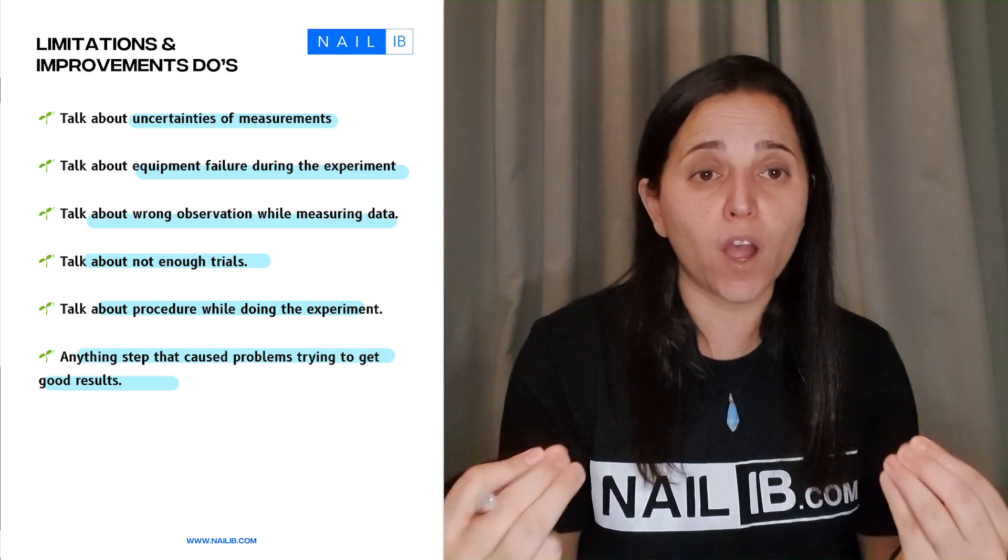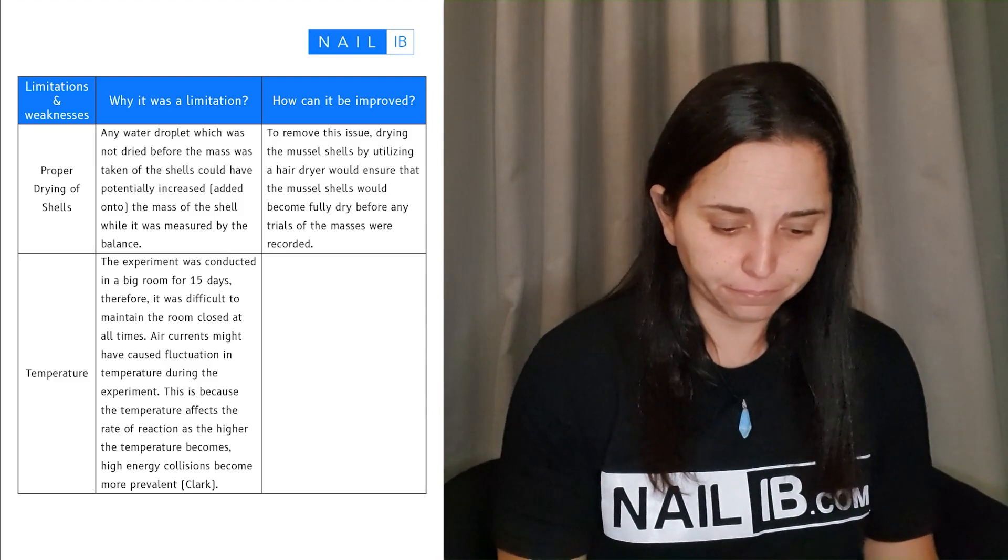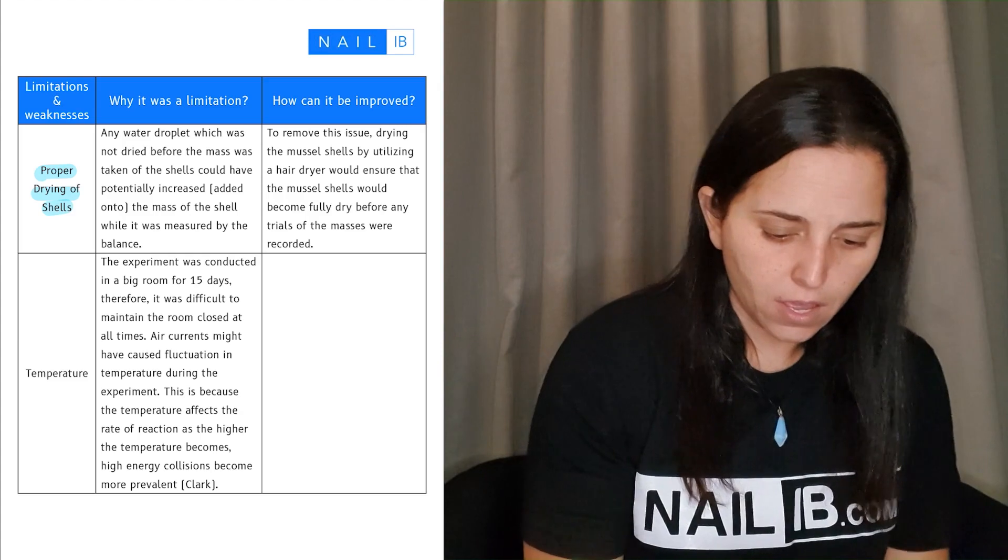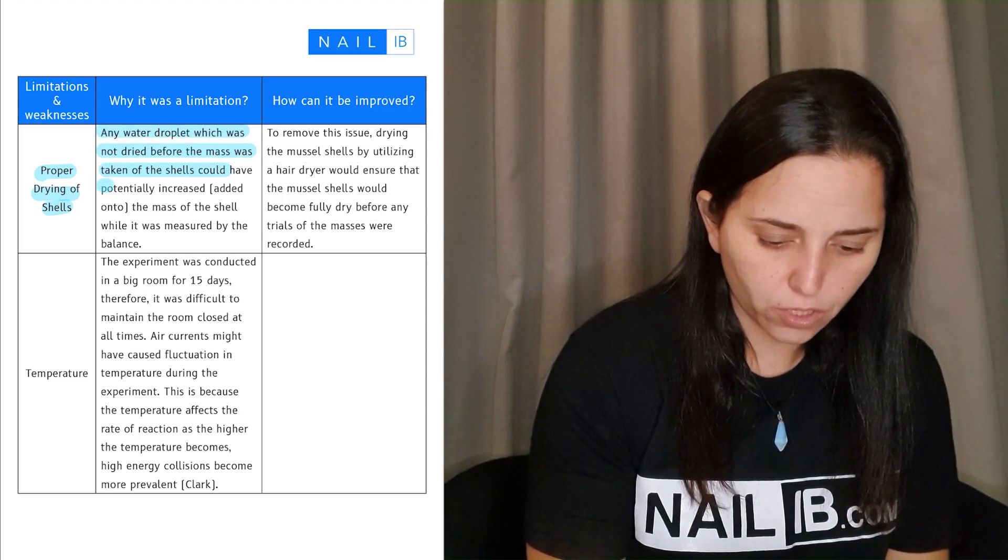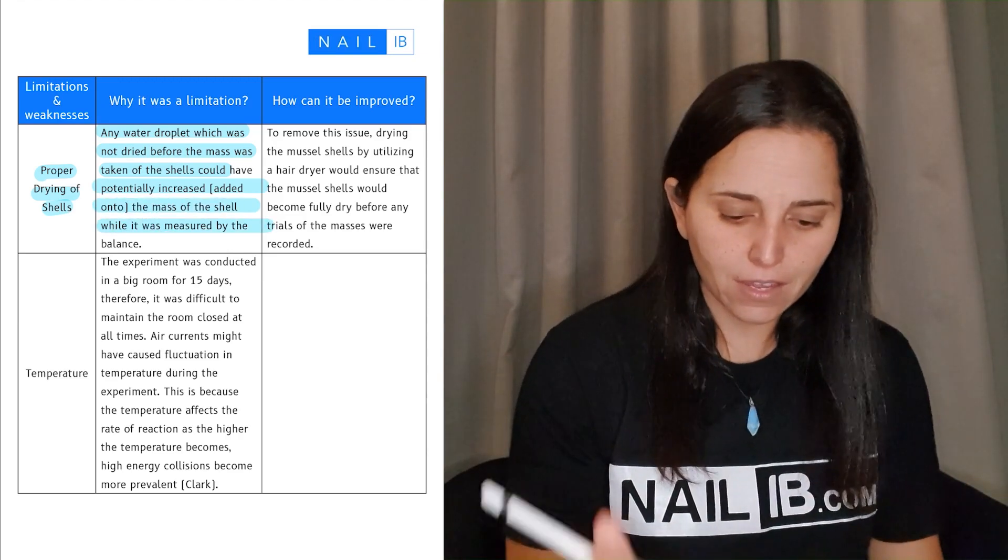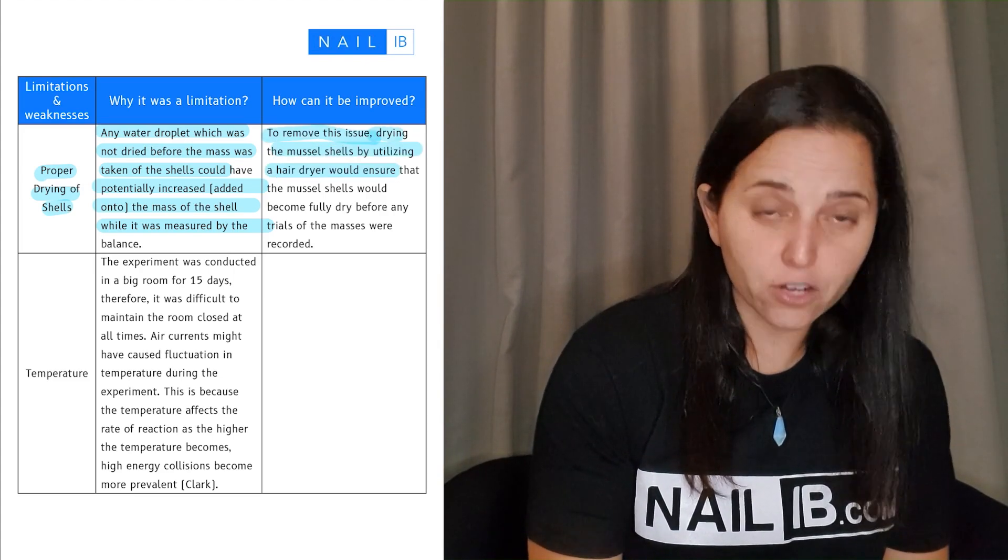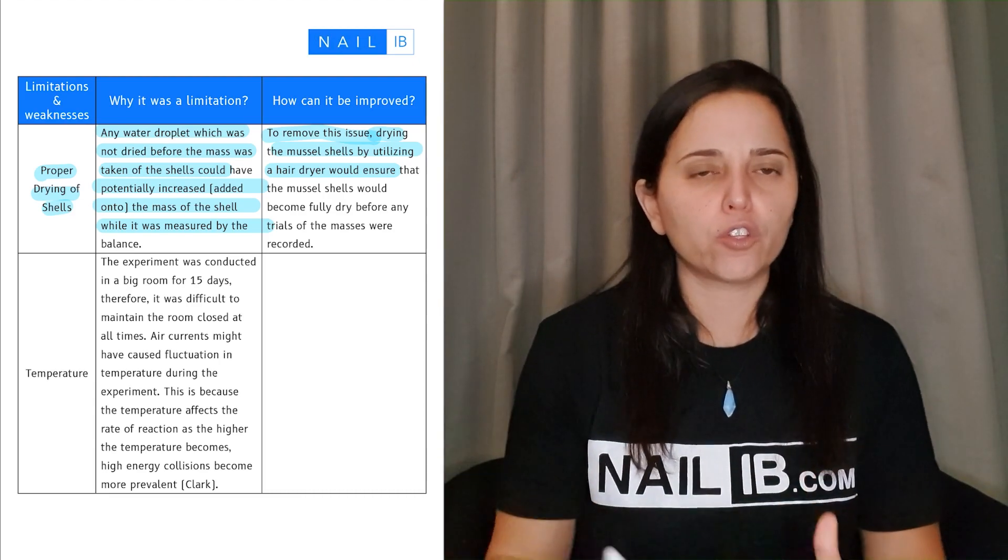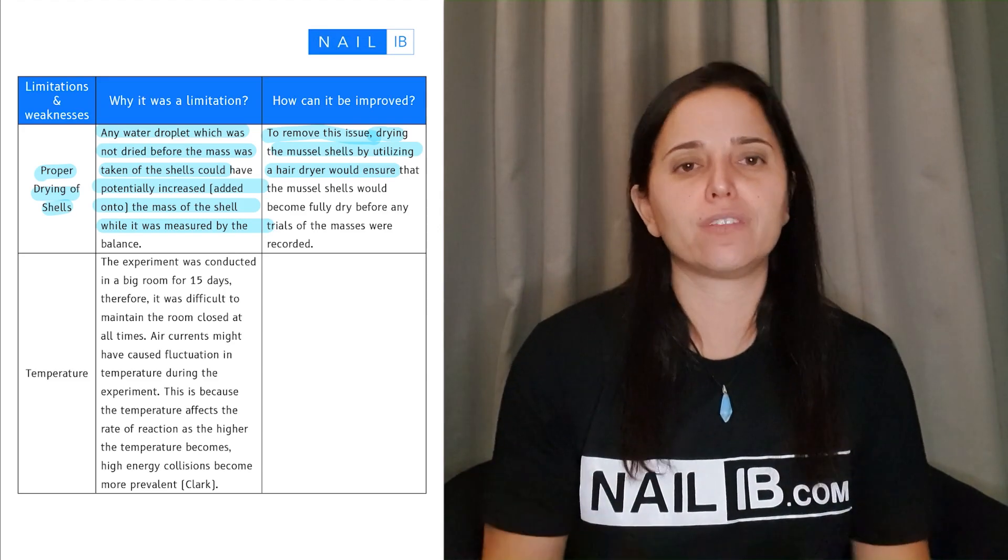Here's an example: proper drying of shells. Limitation: any water droplets which has not dried before the mass was taken off the shells could have potentially increased the mass of the shell. So he told me why that could have been a mistake. Look at this: 'To remove the tissue, drying the muscle shells by utilizing a hairdryer.' He went and gave a little bit extra details. Don't just say 'next time I'll dry it better.' Give me details. This one mentioned hairdryer to dry it, it's got to be very realistic.